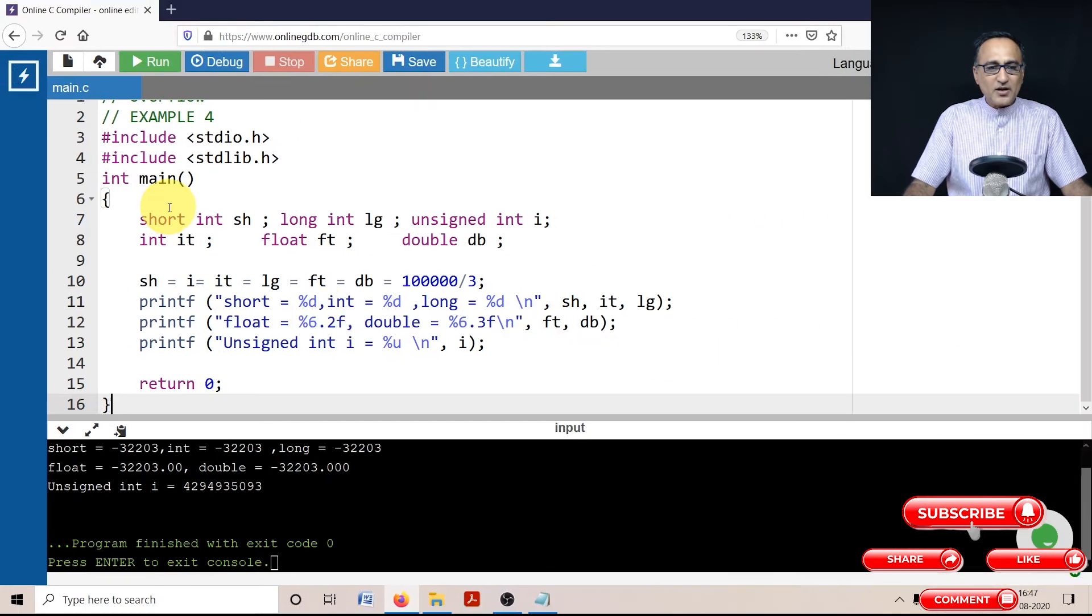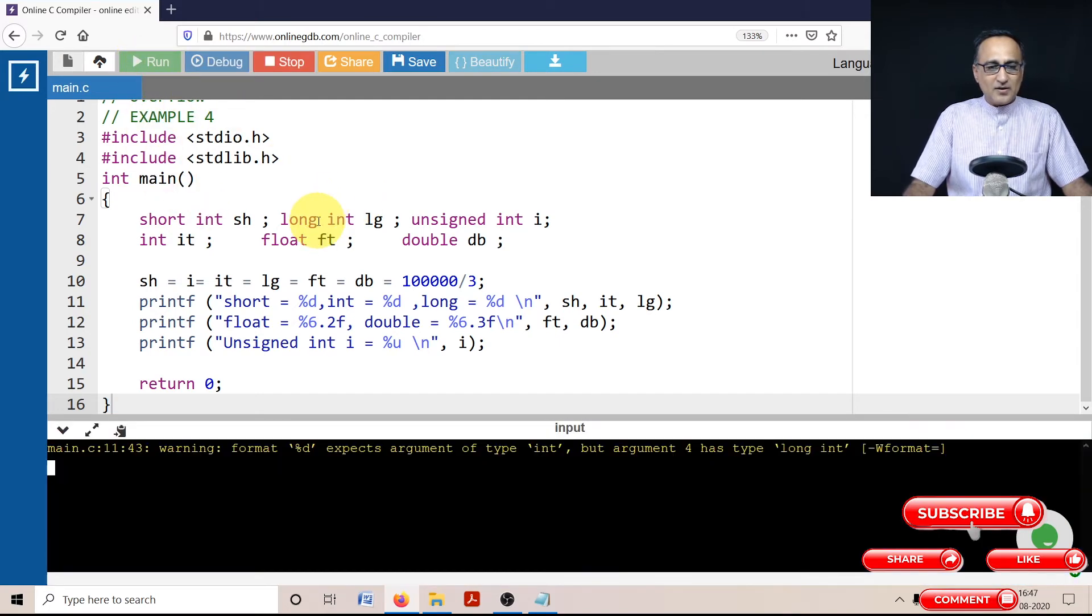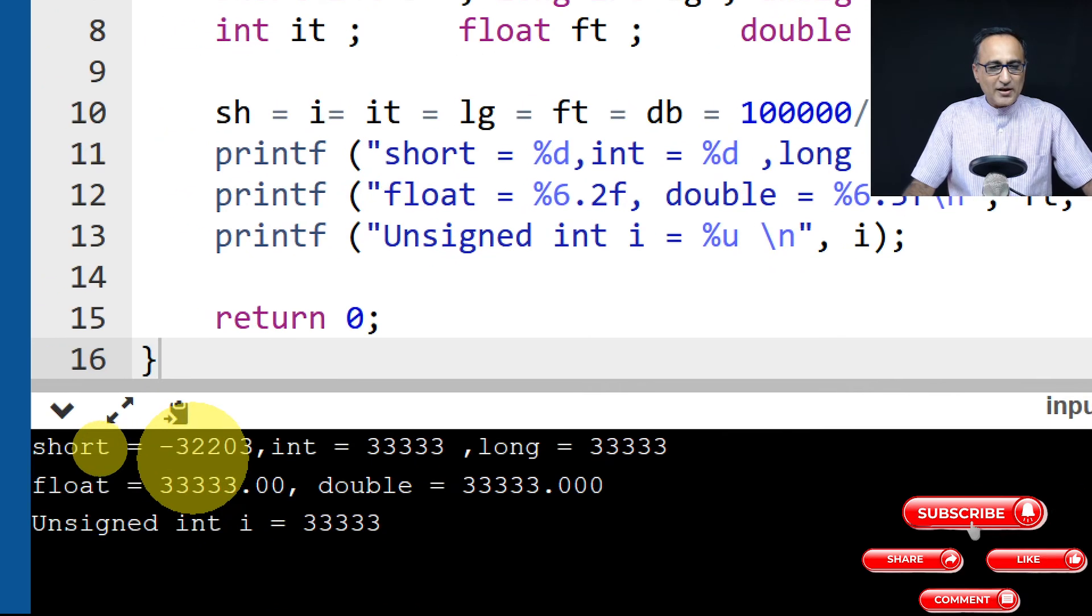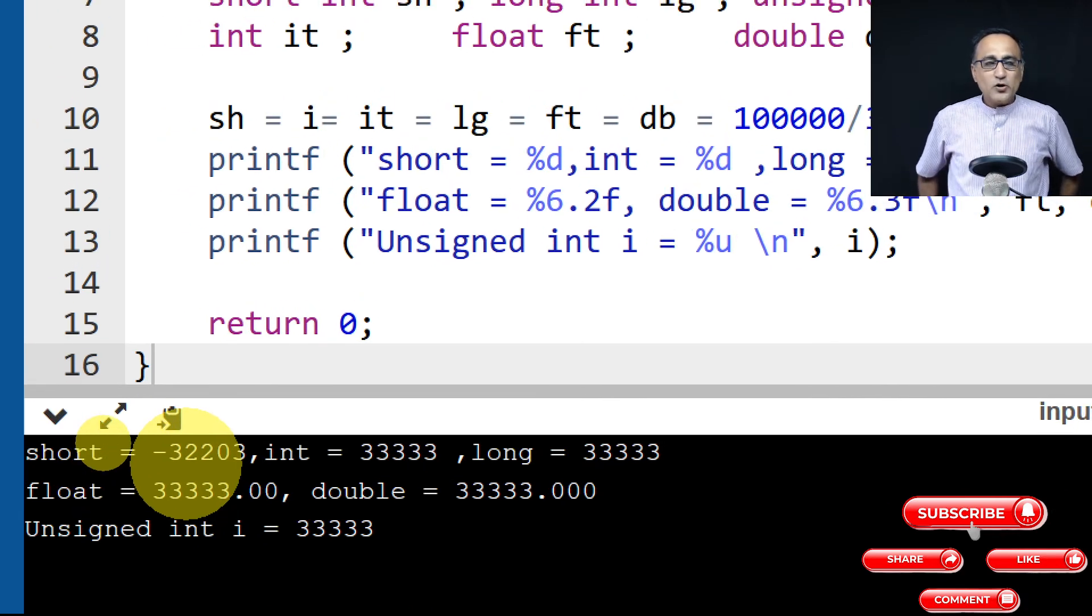So let's try to run this particular piece of code and figure out how the output is really going to look like. So when I click on run, okay, at the bottom of your screen you will see the values that have popped up. So as I had told you earlier, short is going to overflow because it cannot hold 33,333.